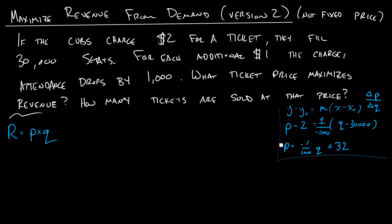So the reason we've done this is it tells us price in terms of quantity, and so when we come back here, we can write R of Q is equal to, rather than price, we'll put this thing in here, because this thing is equal to price, and we'll be multiplying that by quantity. So rather than price, we have negative 1 over 1,000 Q plus 32.